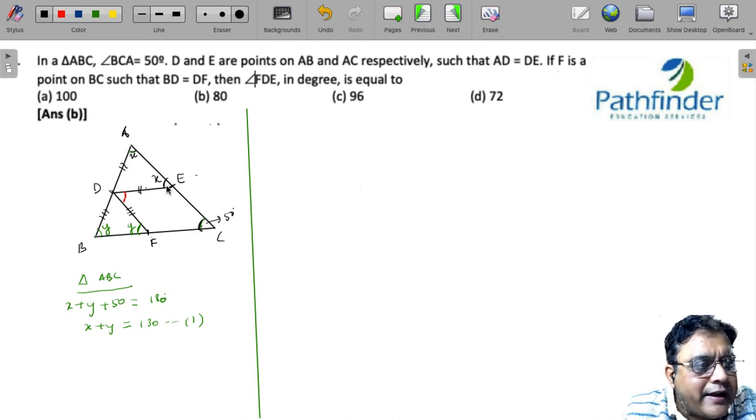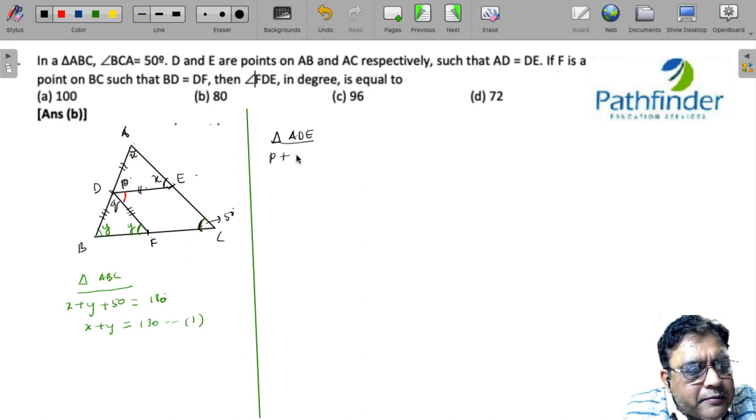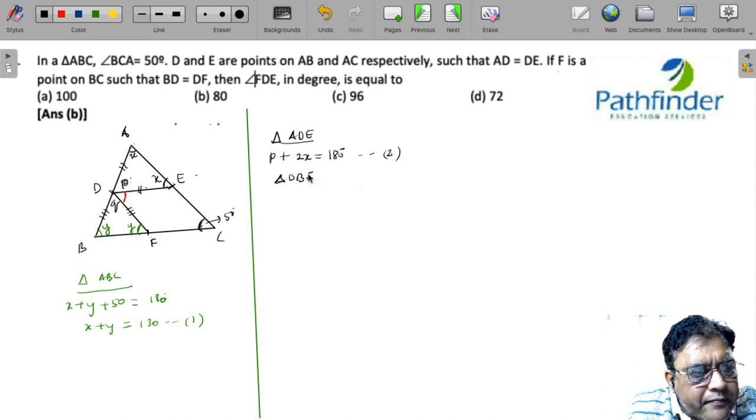Next, consider triangle ADE. In triangle ADE, angle ADE, let us call this as P and let us call this angle as Q. ADE plus AED and plus DAE. These three angles, P plus 2X must be 180 degrees. This is your equation two. Similarly, from triangle DBF, we have Q plus 2Y is 180 degrees.